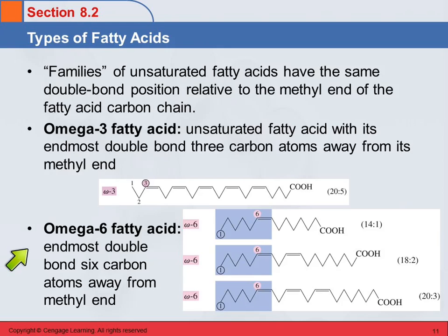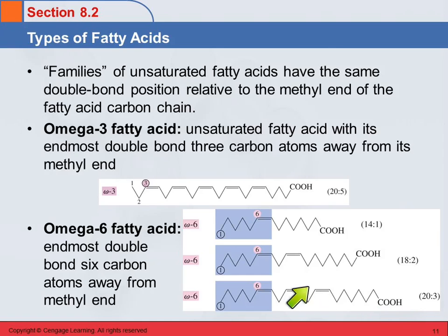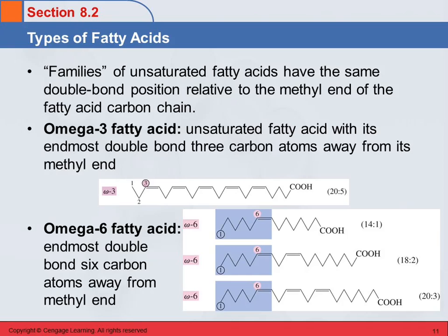In omega-6 fatty acids, that double bond will be on the sixth carbon from the methyl end. Here are three different members of the omega-6 fatty acid family — 14:1, 18:2, and 20:3. The number of double bonds varies and the number of carbons varies, but what's similar is where the last double bond is relative to the end of the chain. That is significant for some biological processes — fatty acids that have this part in common do some similar things.